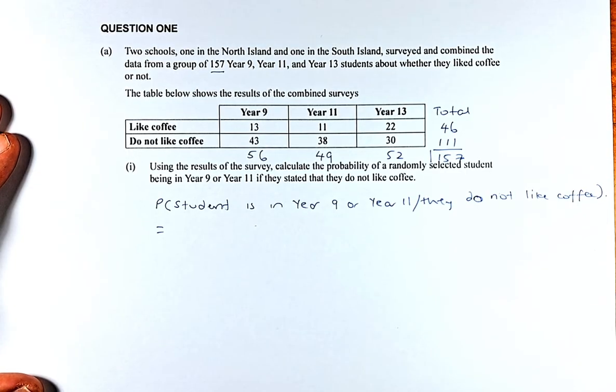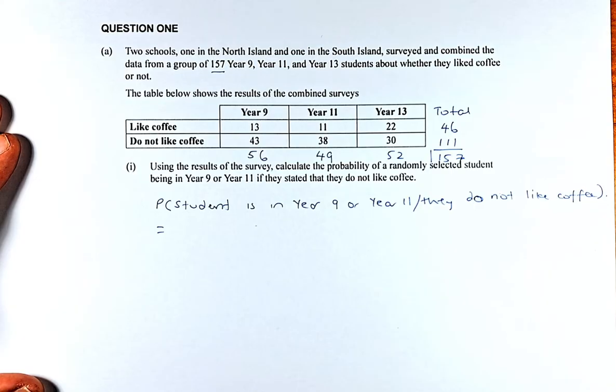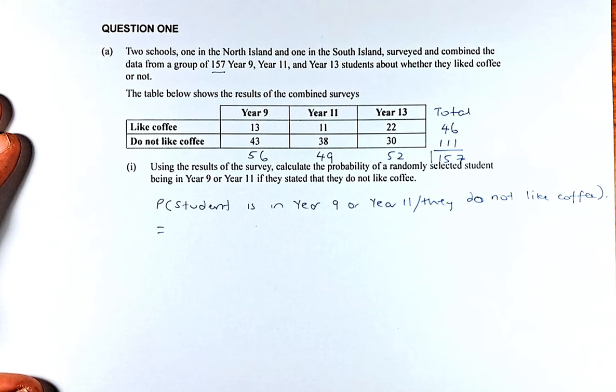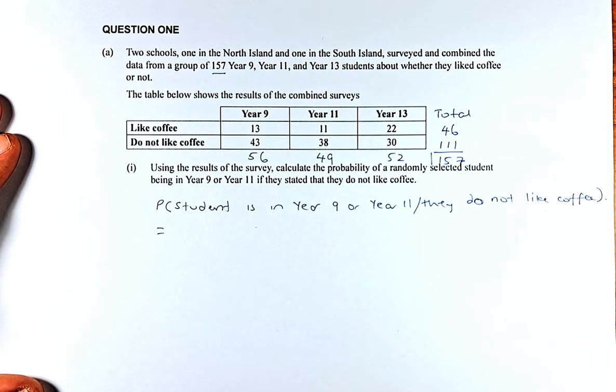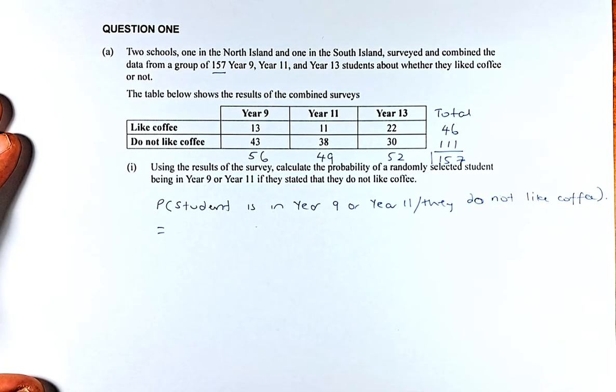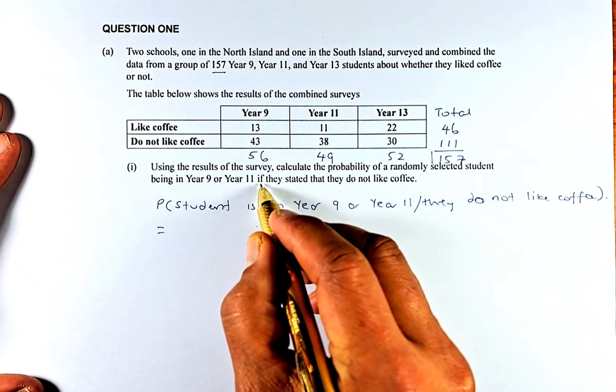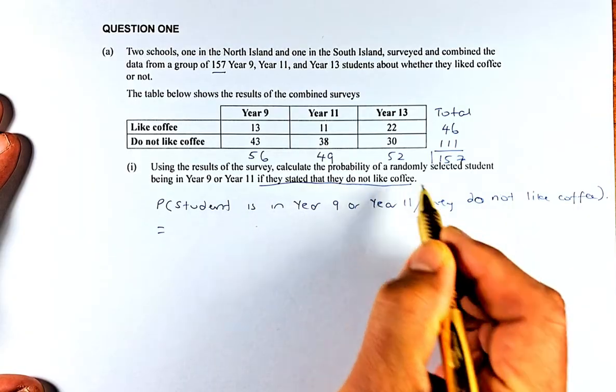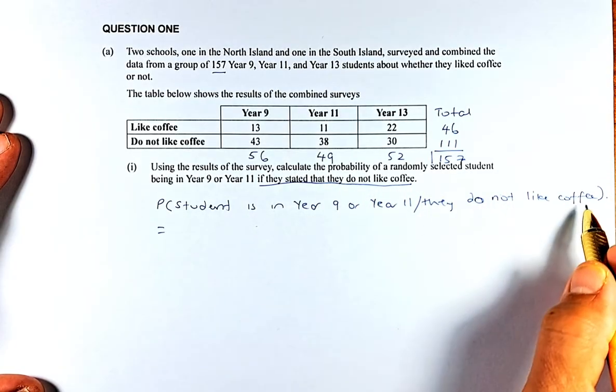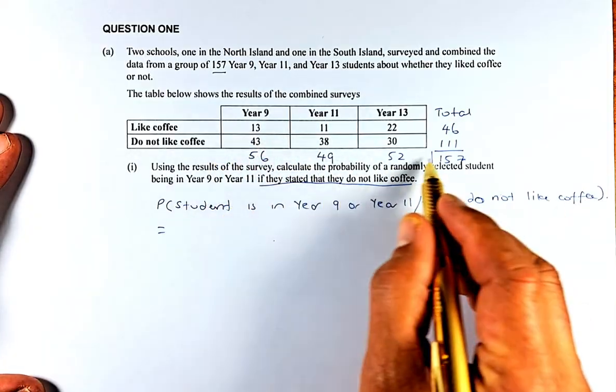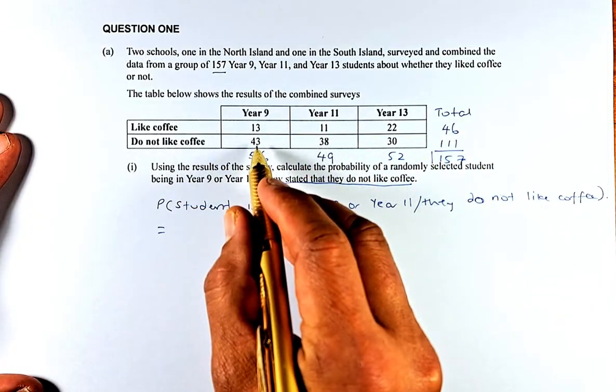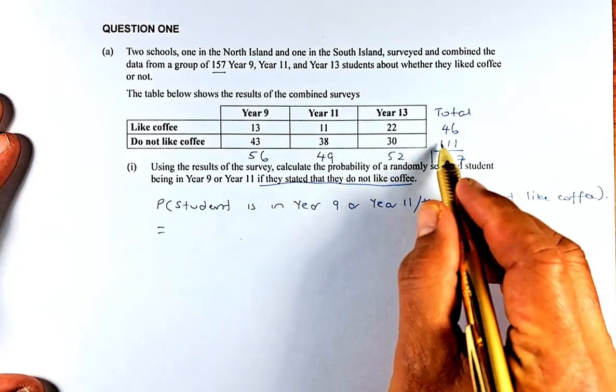Once we have done the totals, it's very simple. Now we're going to answer the question. Using the results of the survey, calculate the probability of a randomly selected student being Year 9 or Year 11 if they stated that they do not like coffee. This is conditional probability. The statement is they do not like coffee, so we are only interested in that row. We're looking at 43, 38, 30, and 111.